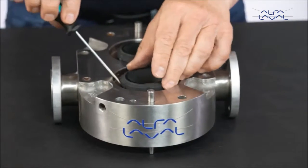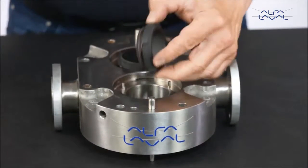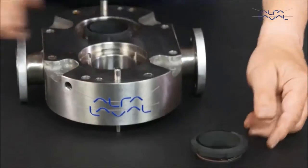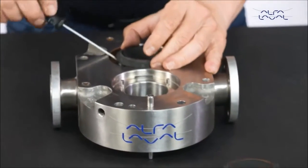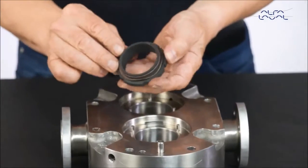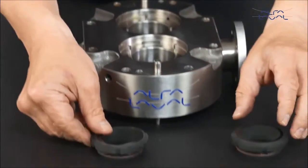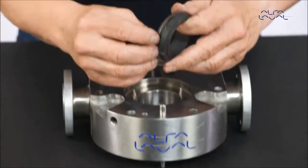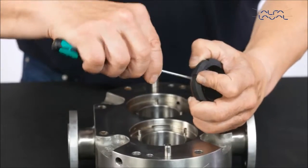Start by removing the inner seals from the pump body. Remove the O-ring and the wave spring from the inner seals.